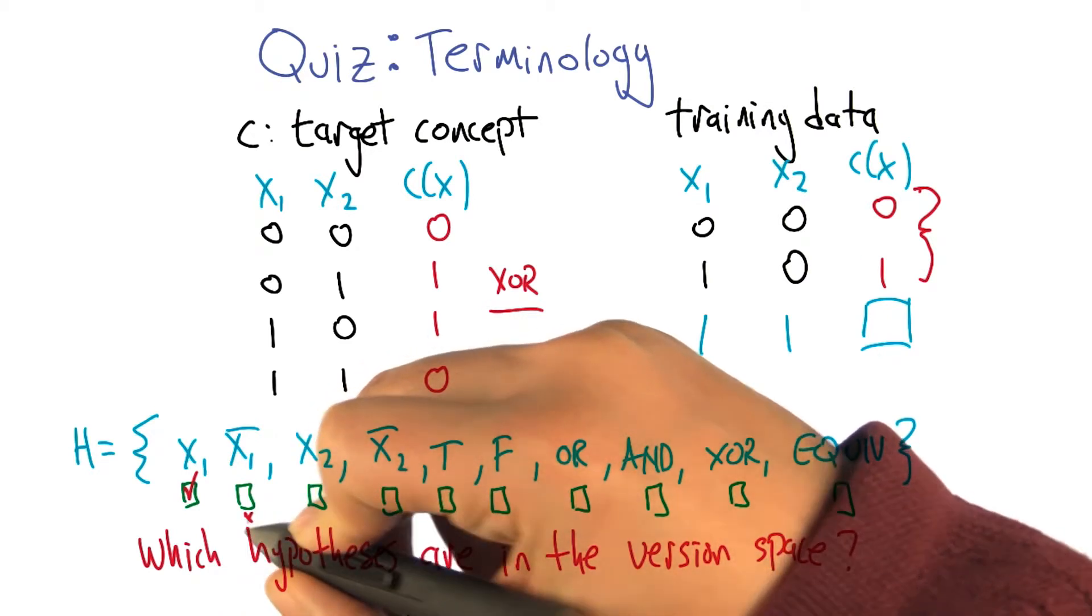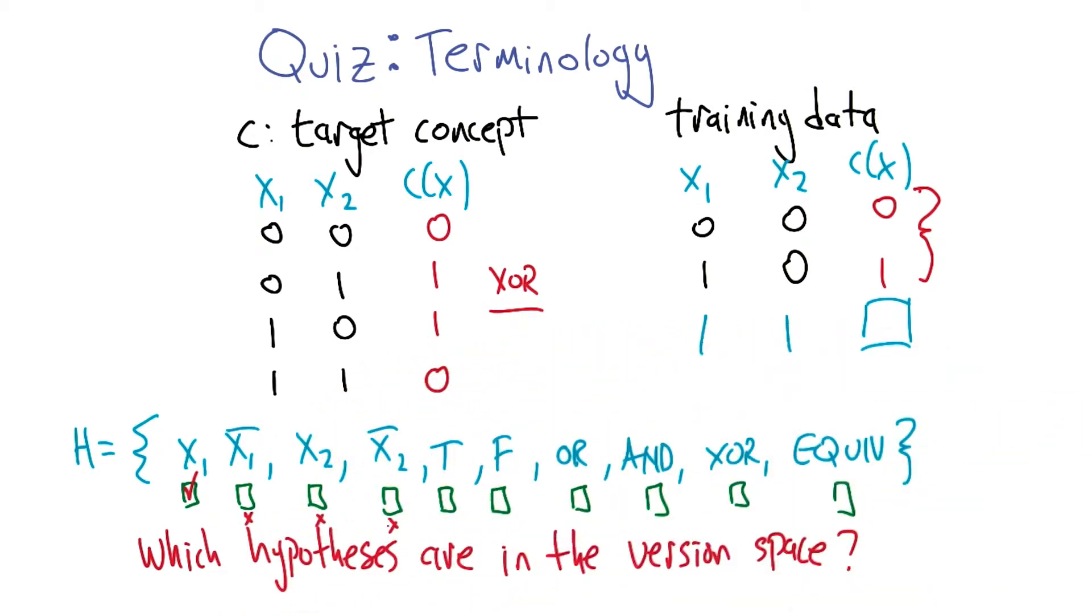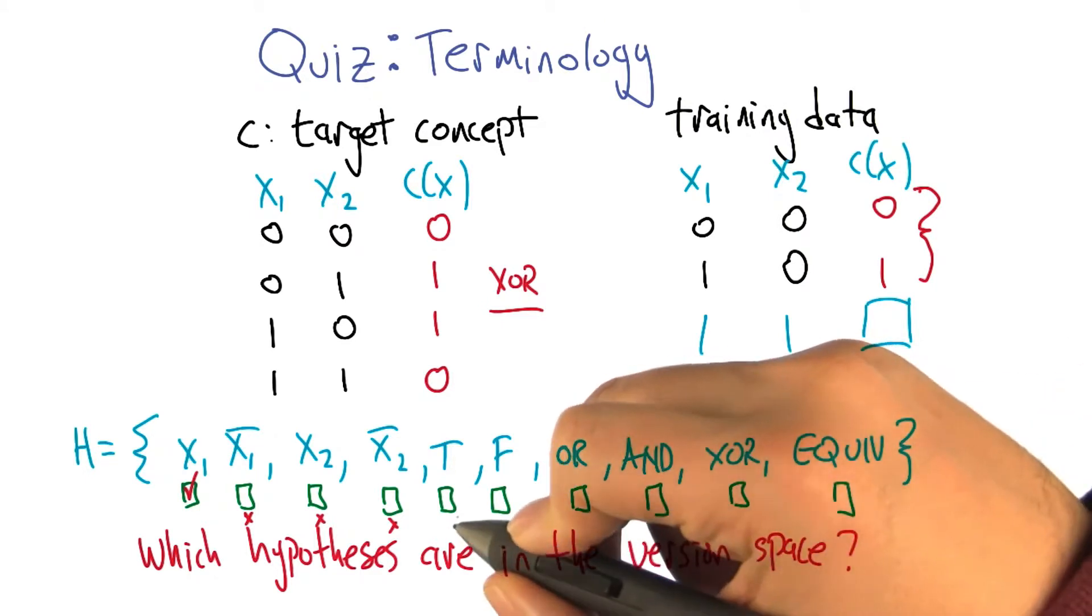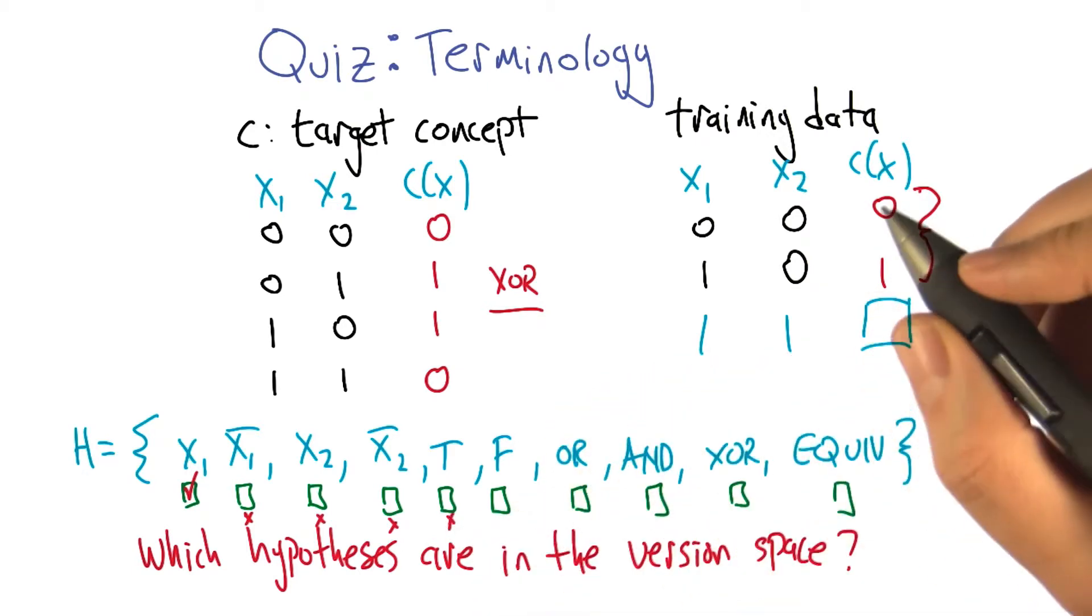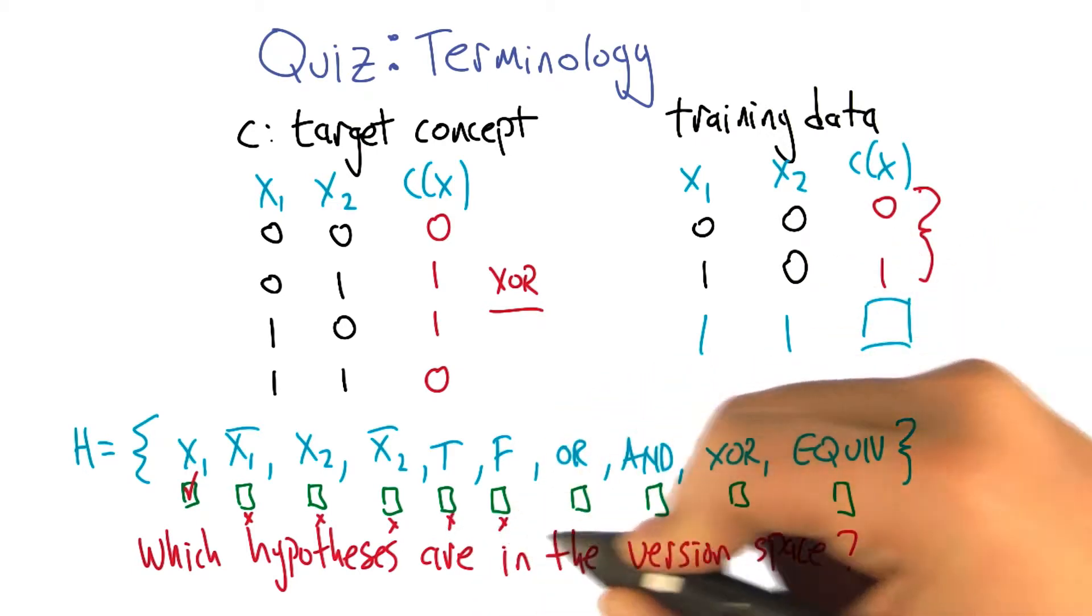So we can't have x2, and by very similar reasoning you can't have the opposite of x2. Agreed. Okay, so true is clearly not consistent because we got a 0 once and a 1 once. And by the same argument, false is not consistent because we got a 0 once and a 1 once.